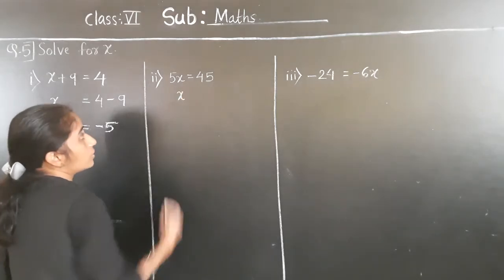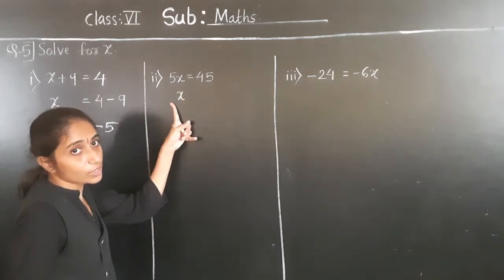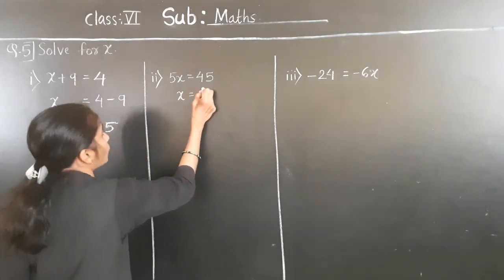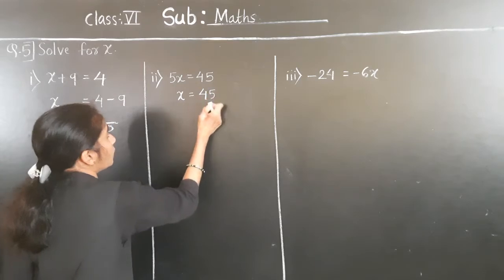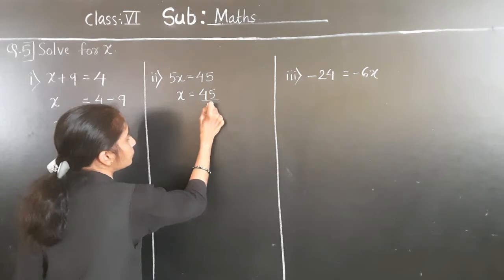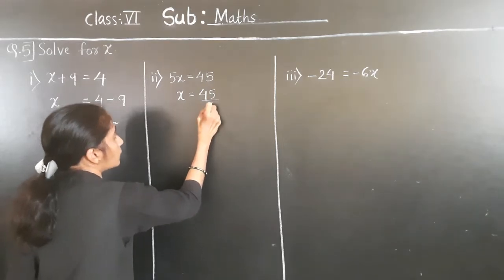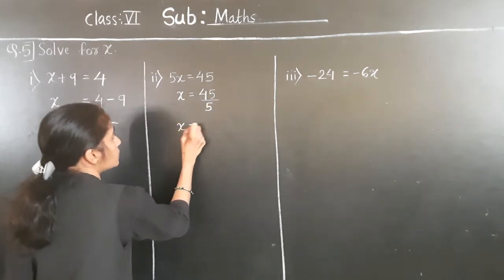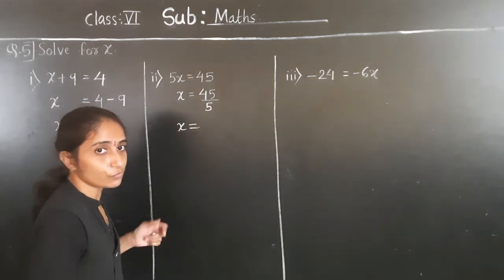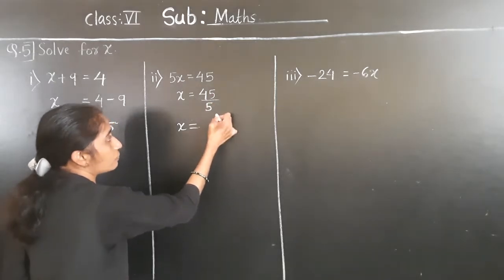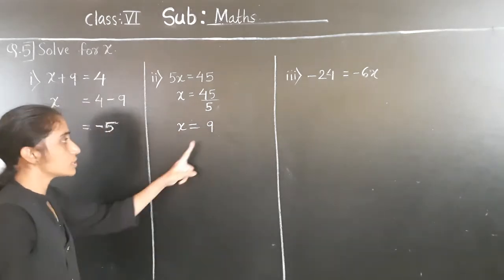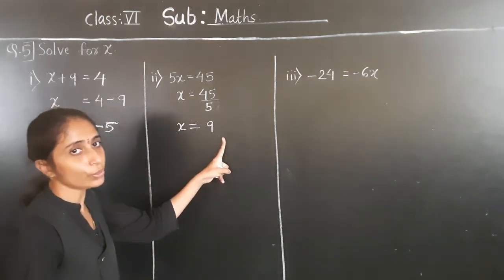So write x is equal to 45 divided by 5. We do not write 5 again on the left side because we are transferring it to the right hand side. Now 5 ones are 5, 5 nines are 45, so x is equal to 9.